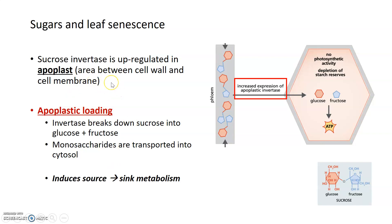Later in leaf senescence, sucrose invertase is upregulated in an area called the apoplast — the area between the cell wall and the cell membrane of a plant cell. During a process called apoplastic loading, you increase the expression of invertase in that area. Invertase takes sucrose — one glucose and one fructose — and breaks it down into its monomers, glucose and fructose, transporting them from the phloem outside the plant cell into the cytosol, where glucose can then be used to make ATP.